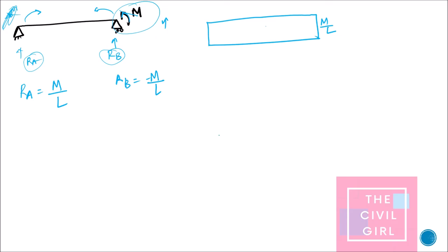For the bending moment diagram: at the simply supported end there is no moment, so bending moment starts at zero. Even though it is simply supported, I have an applied moment at that end, so I produce that moment value there — and the variation will be linear.